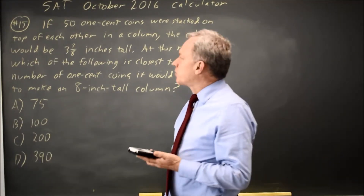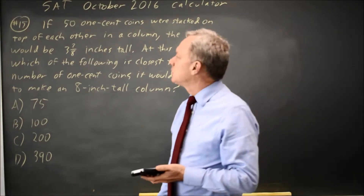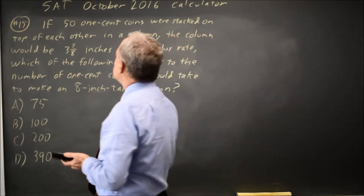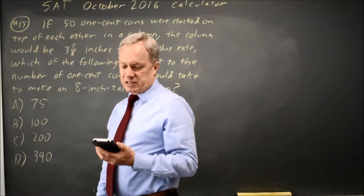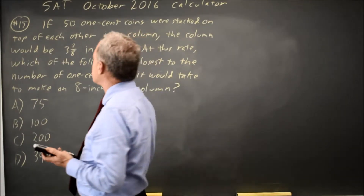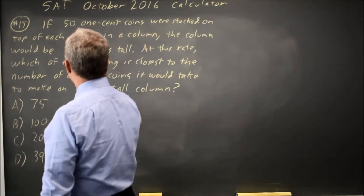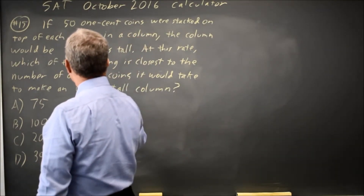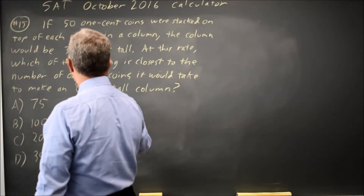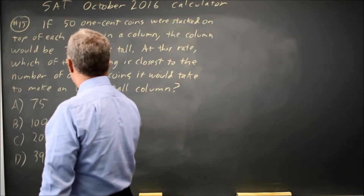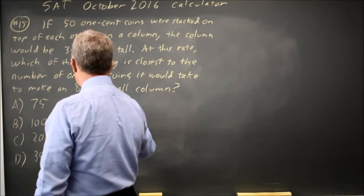I prefer to write 3 and 7 eighths as a decimal. On my calculator, 3 plus 7 eighths equals 3.875. So I'm going to write a ratio: 50 coins over 3.875 inches.